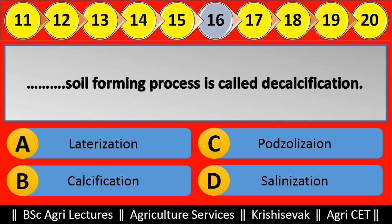Question 16: Blank soil forming process is called decalcification. Options are: (a) Lateralization, (b) Calcification, (c) Podzolization, (d) Salinization. Right answer is Podzolization, option C.